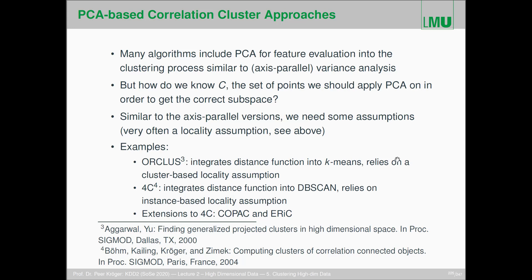The clustering process can be very similar to axis-parallel variance analysis or axis-parallel subspace clusters, but now instead of variance — axis-parallel variance analysis — algorithms now use PCA. The only question is how do we know the cluster members on which we have to apply PCA? Similar to axis-parallel versions, we need some assumptions, and very often a kind of locality assumption.